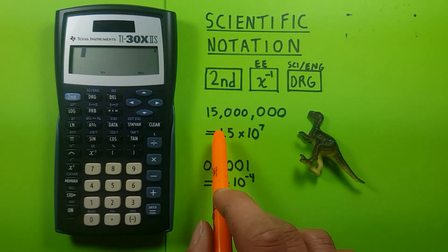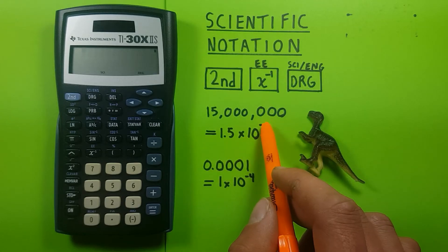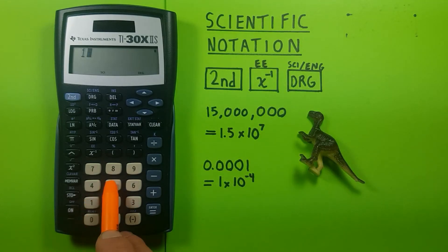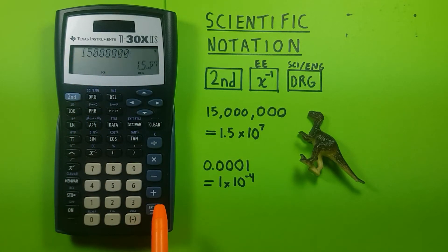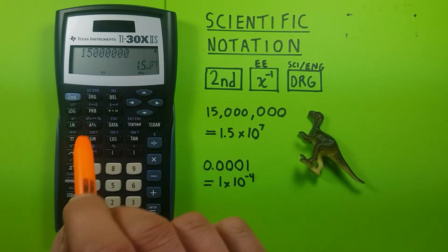So if we wanted to get 1.5 times 10 to the 7th, and we had 15 million, we could enter that 15 million. 2, 3, 4, 5, 6, there we go. Press enter, and this converts it for us to scientific notation.